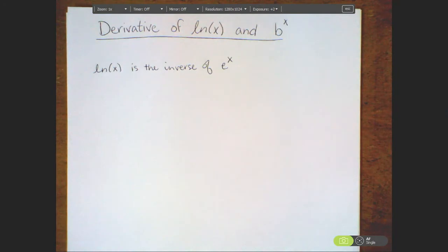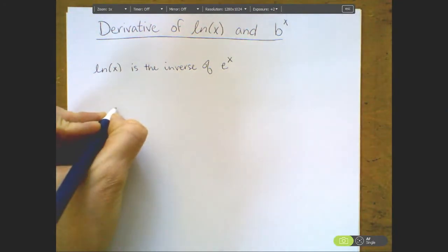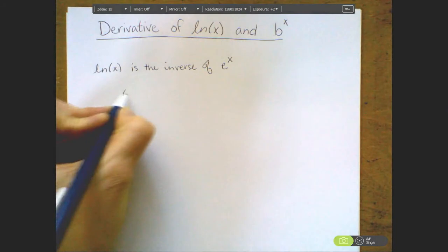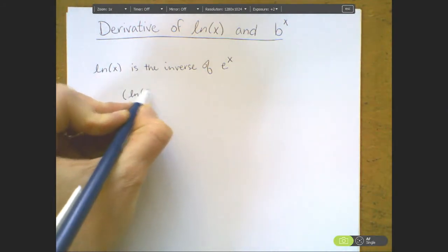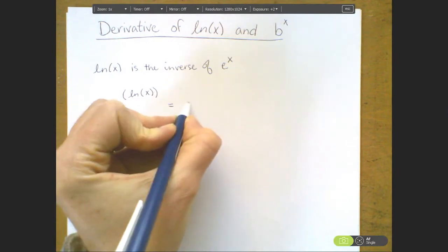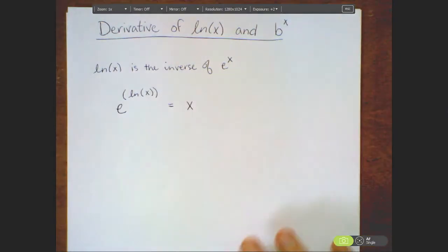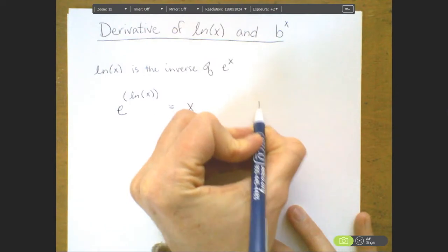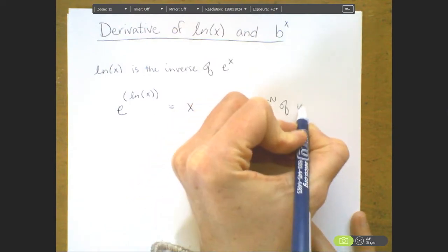What does that mean? That means that if I compose my function e to the x and instead of putting in x, I put in its inverse function, natural log of x, I get back what I started with, which is the value of x. This is my definition of inverse functions.